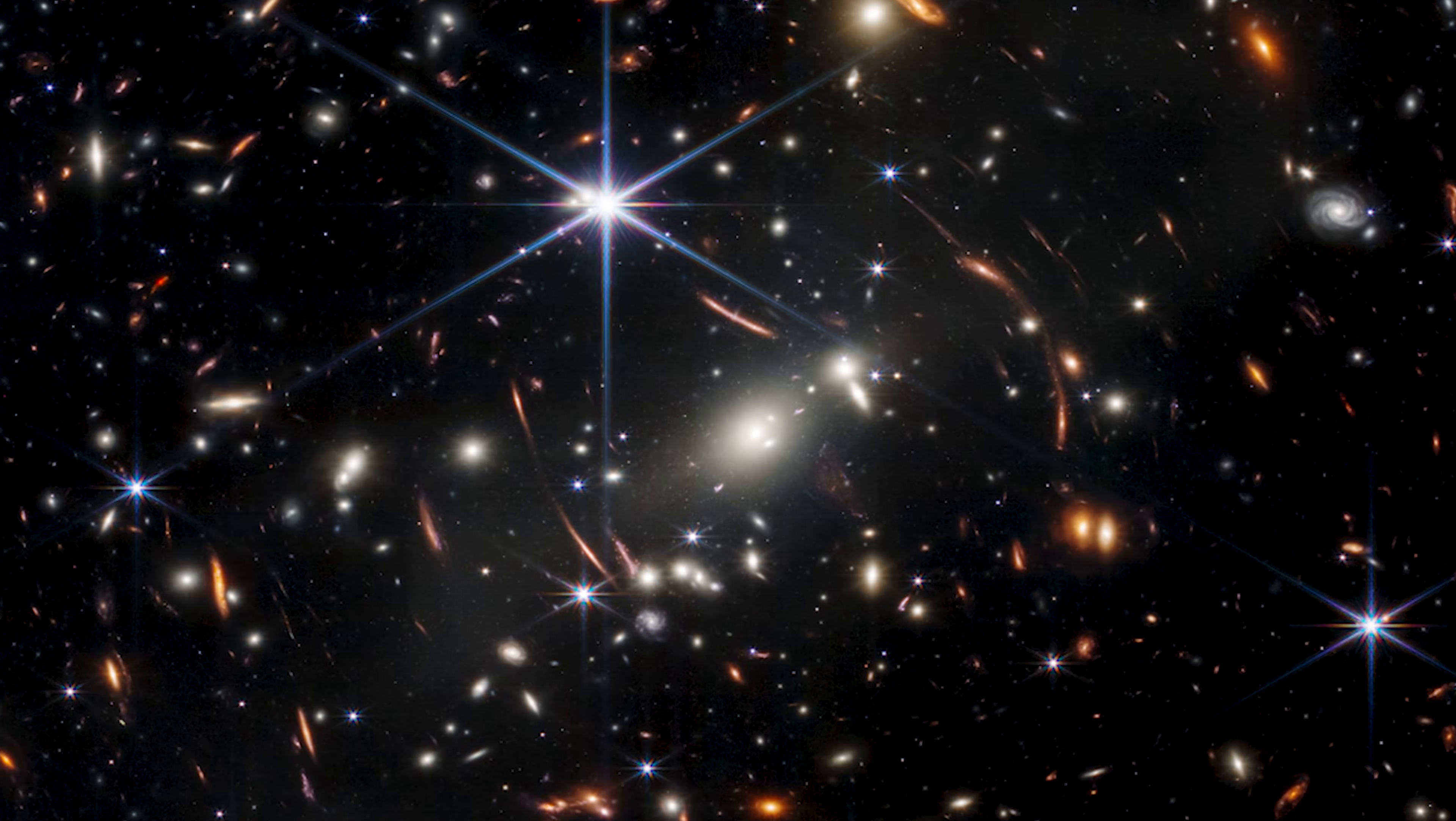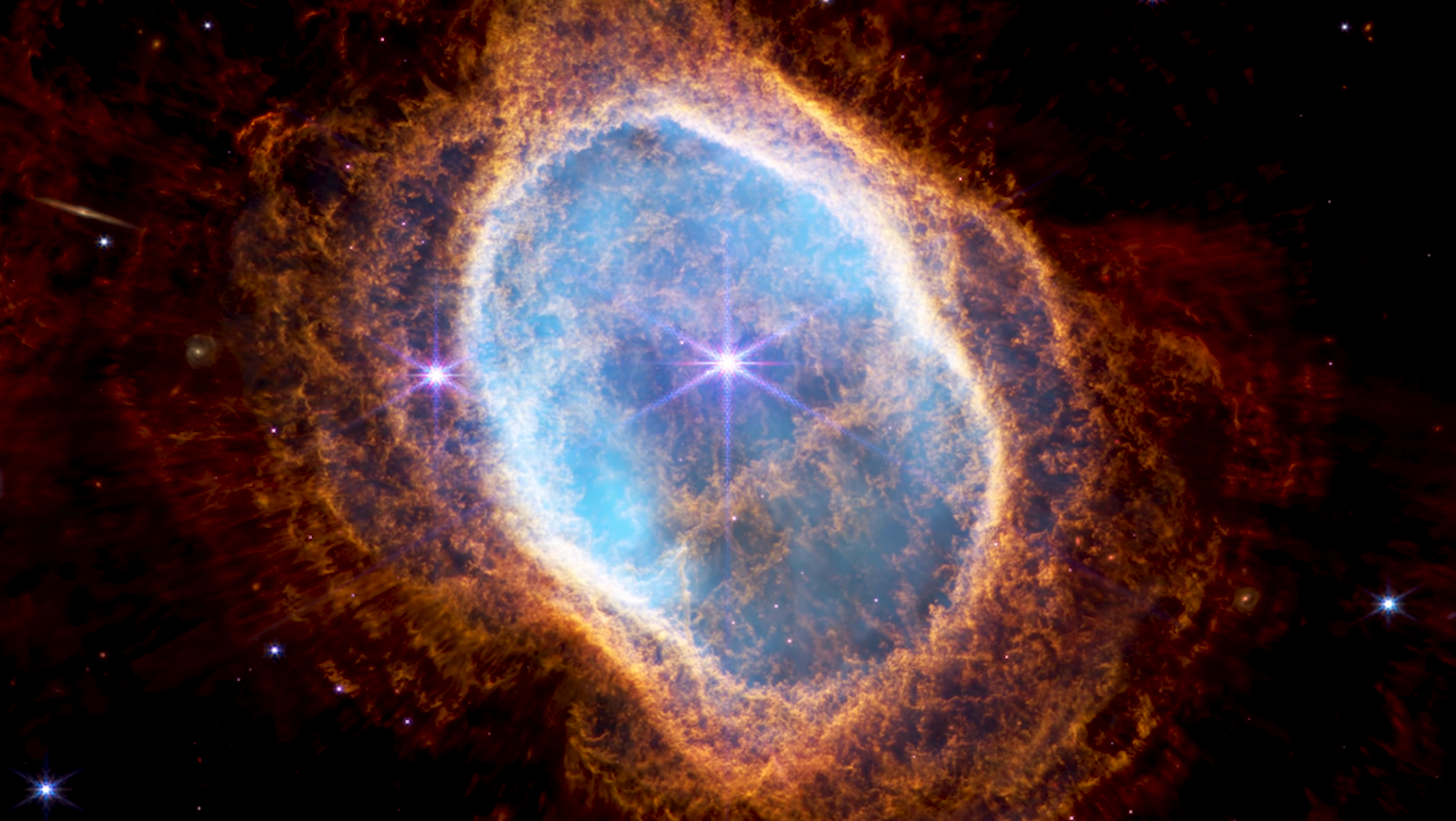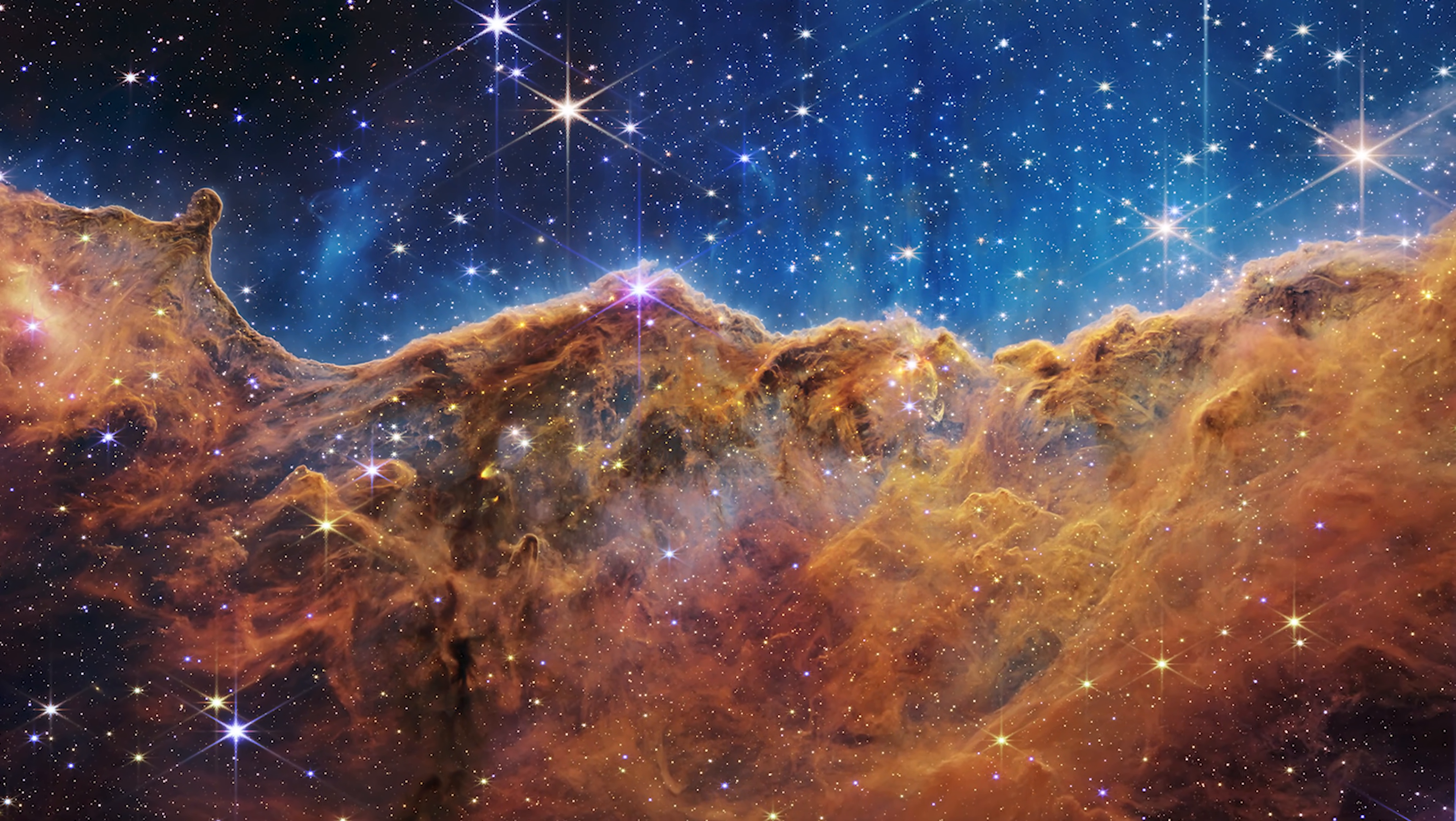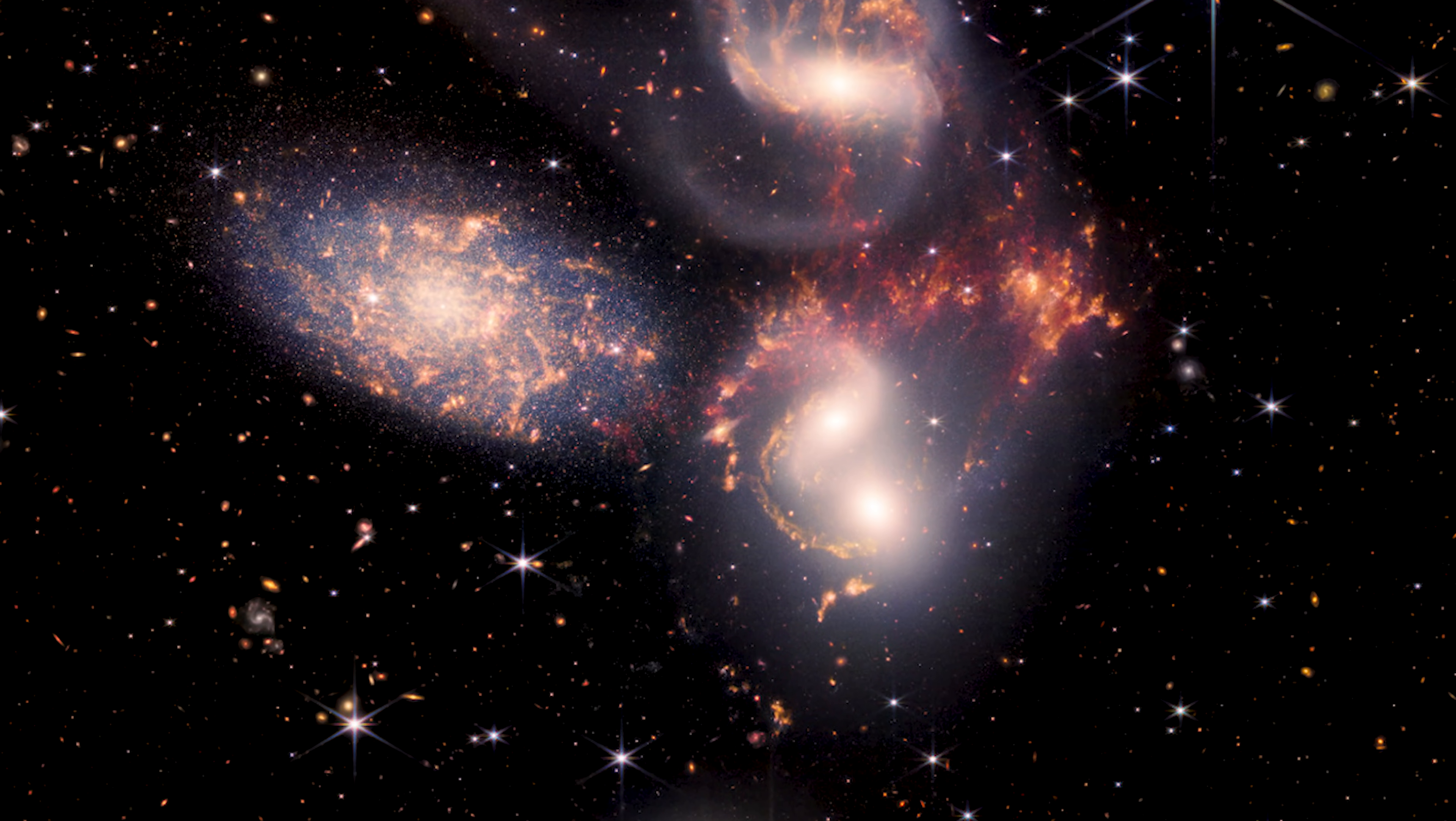Instead of small, faint, primitive galaxies slowly taking shape, Webb found thousands of objects that shouldn't exist at all. They're too bright, too massive, too dense, too evolved. Astronomers stared at the data and said the same thing over and over again. That's not right.